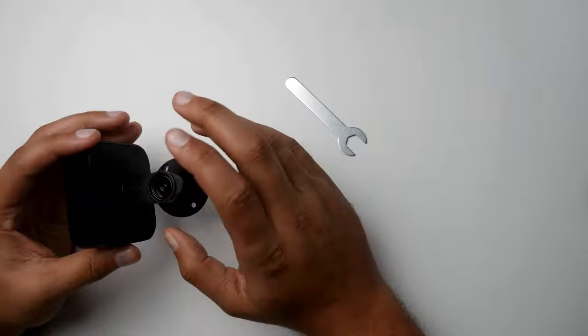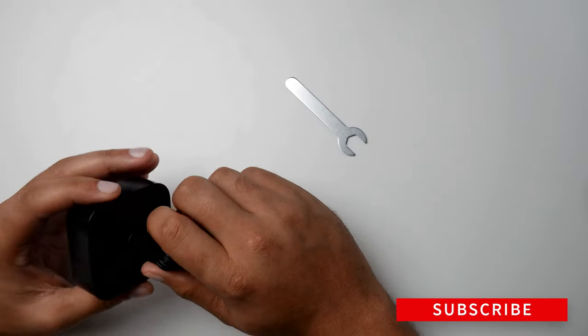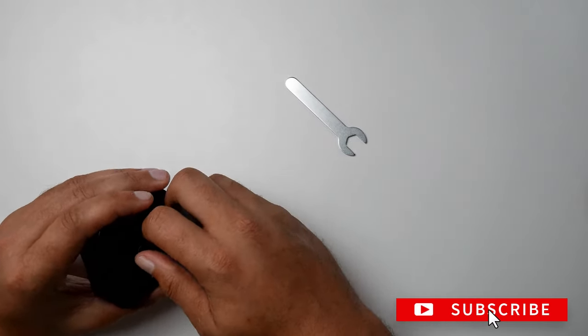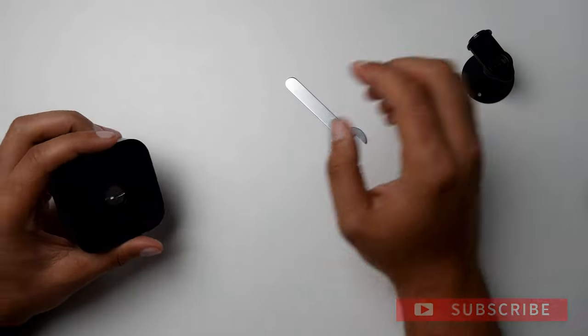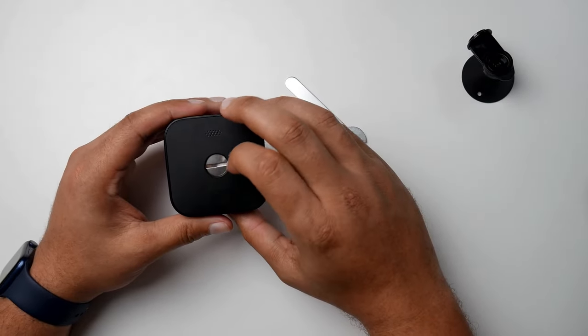Now if you have the mount on the back, what we need to do is just pop that off and what we'll see is a little screw.